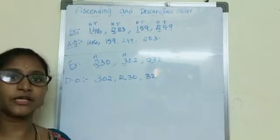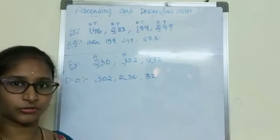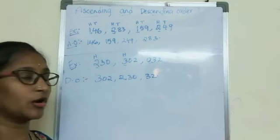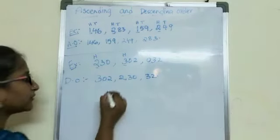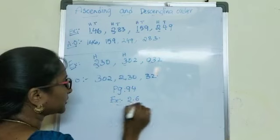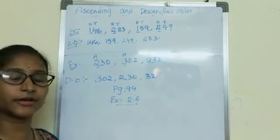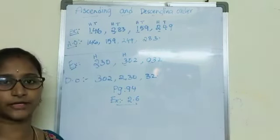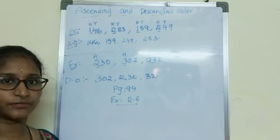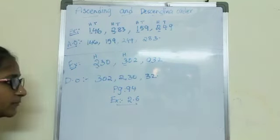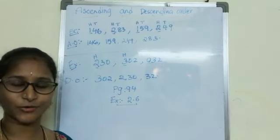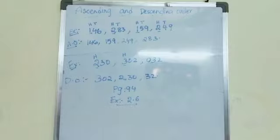Once again, I am repeating: ascending order means remember ant — small to big. Descending order means remember the dinosaur — big to small. I want everyone to open page 94, exercise 2.6. In that you have sums regarding decreasing order and increasing order on pages 94 and 95. I want you all to do those assignments in your textbook and understand well. Hope you all understand well. Take care of yourselves. Stay home. Bye-bye.